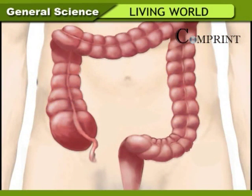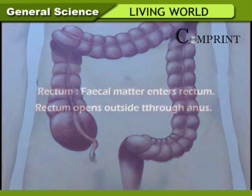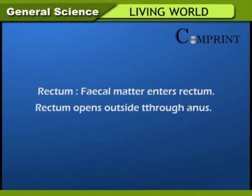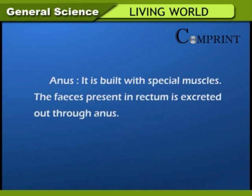Large intestine. There are no digestive glands in the large intestine. Digestion does not take place here. The walls of the large intestine absorb the water present in the food. Undigested food becomes fecal matter. Rectum. Fecal matter enters the rectum. The rectum opens outside through the anus. Anus. It is built with sphincter muscles. The feces present in the rectum are excreted out through the anus.